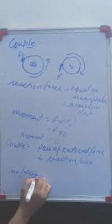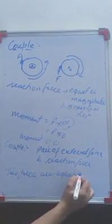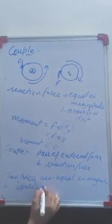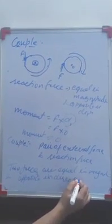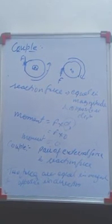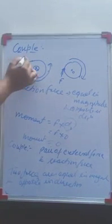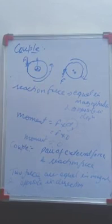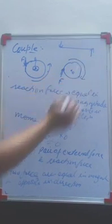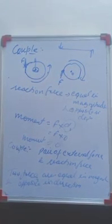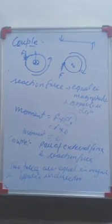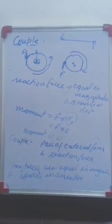These two forces are equal in magnitude and opposite in direction. And one thing more — whenever it is about rotation, these two forces act on different lines of action. If the line of action of one force is here and the other force acts on a different line, then only rotation will be produced. So we can say opposite and parallel forces not acting along the same line will produce rotation and form a couple.